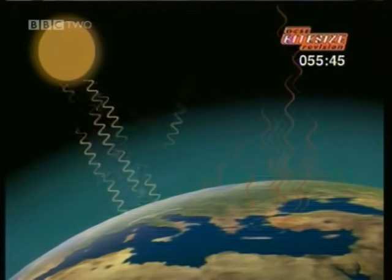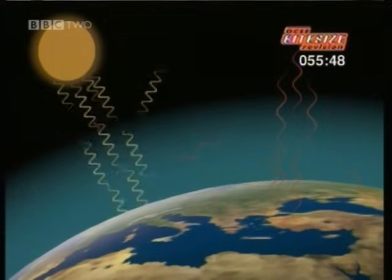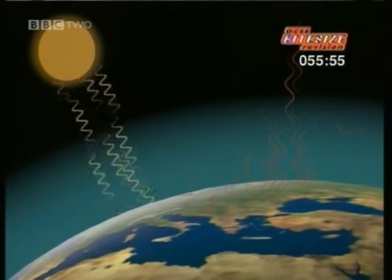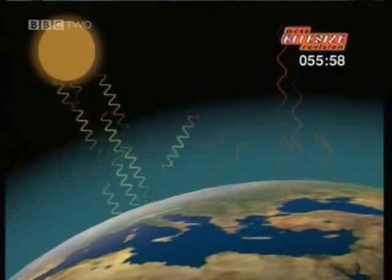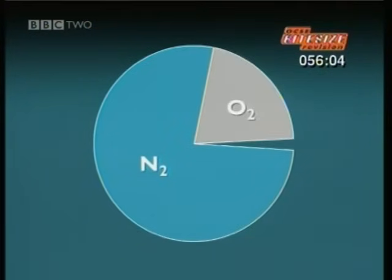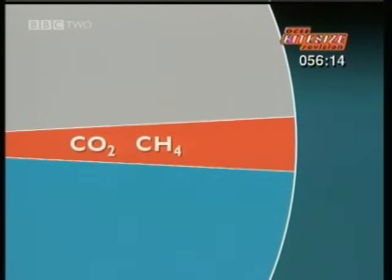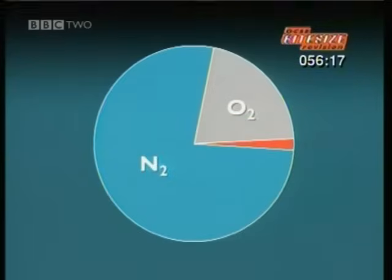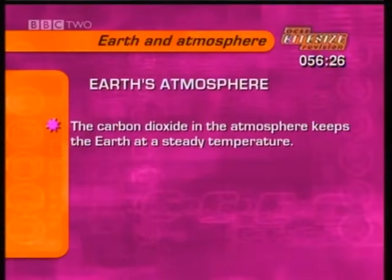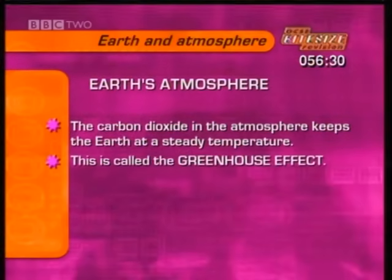This is the greenhouse effect. Overall, the Earth and its atmosphere receive and give off exactly the same amount of radiation, so the Earth stays at a steady temperature. But without the greenhouse effect, this temperature would be much lower. The atmosphere is 78% nitrogen and 21% oxygen. The gases that cause the greenhouse effect are contained in the remaining 1%. The main ones are carbon dioxide, methane and water vapour. Although the greenhouse gases form a tiny proportion of the atmosphere, they are vital to our survival. It's the layer of carbon dioxide in the atmosphere that keeps the Earth at a steady temperature — this is called the greenhouse effect.